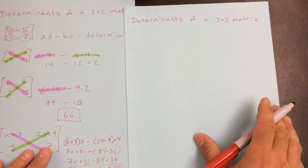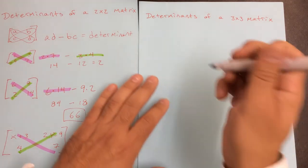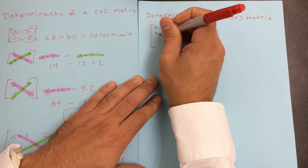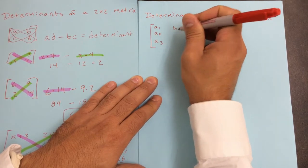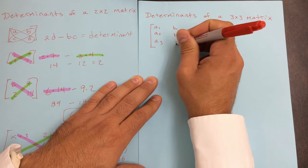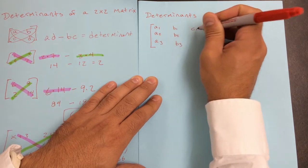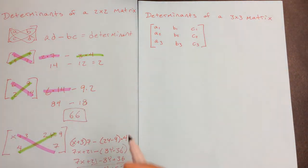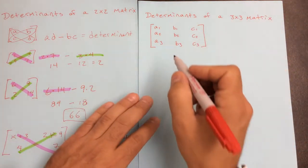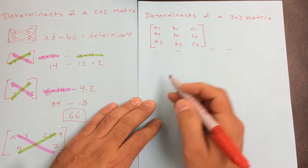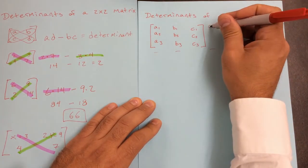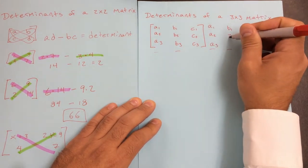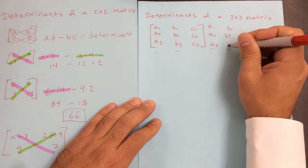The 3x3 is a little more tricky. On the 3x3, we call our values A1, A2, A3, B1, B2, B3, C1, C2, C3. What you need to do is write your first two columns on the outside of the matrix. So I'm going to rewrite A1, A2, A3, B1, B2, B3 right here.